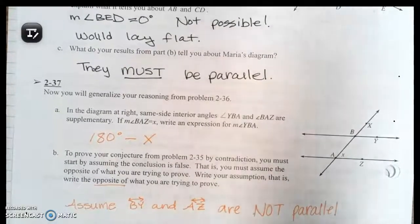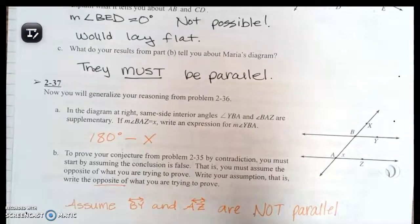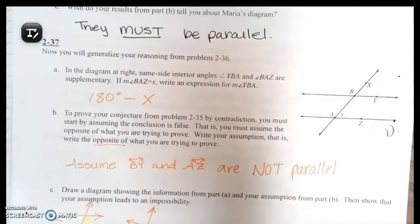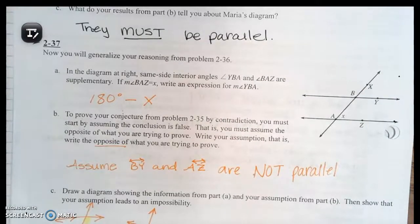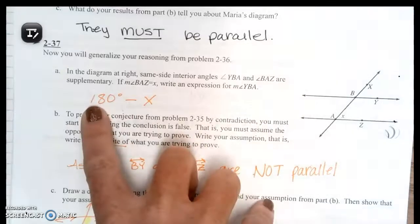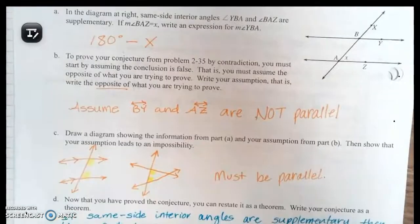Question 37: now you will generalize your reasoning from problem 36. Part A says in the diagram at right, the same side interior angles YBA and BAZ are supplementary. So if angle BAZ is x amount of degrees, write an expression for what would the other angle be, YBA. Whatever measure they tell us it is, we're just going to subtract it from 180. We always start with 180 and we subtract. So like if they told us it was 30, we would go 180 minus 30, that would be 150. If they told us it was 45, we would have 180 minus 45, subtract it, and that would give us the other measure.